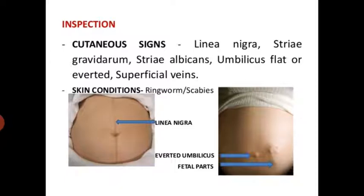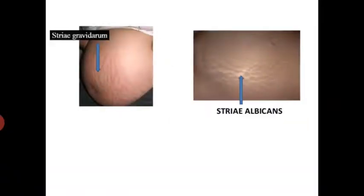Cutaneous signs: linea nigra, striae gravidarum, striae albicans, and the umbilicus — flat or inverted. Superficial veins are seen in pregnancy. Skin conditions such as ringworm and scabies should be noted. The linea nigra is a dark line between the pubic symphysis and the sternum. Striae gravidarum are shiny marks (stretch marks) seen on the abdomen.